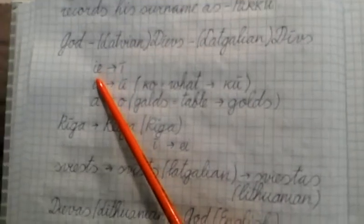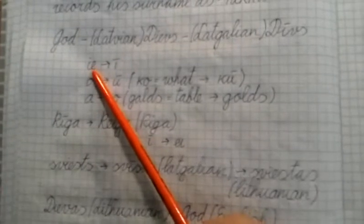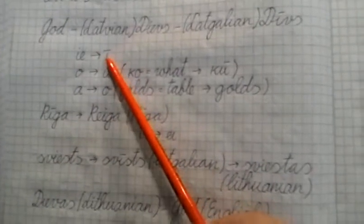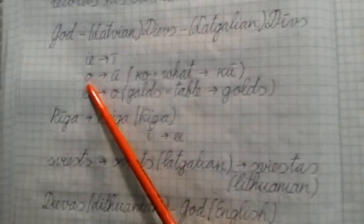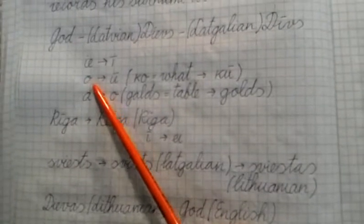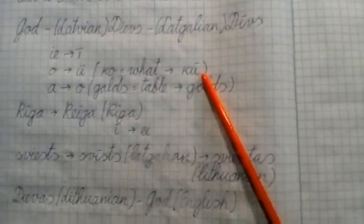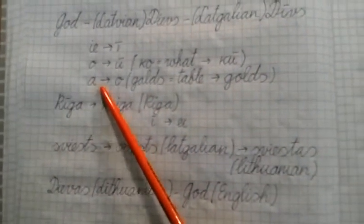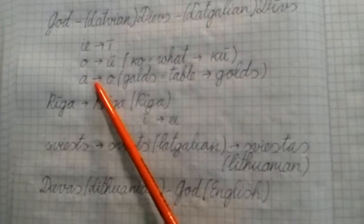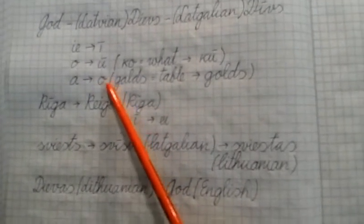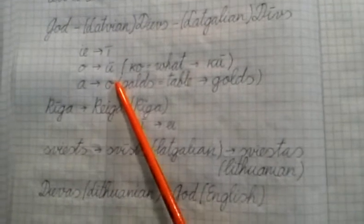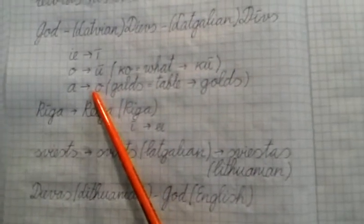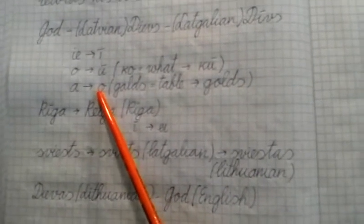For this example, here Latvian i becomes Latgalean i. Latvian u becomes Latgalean u. Latgalean u, but not ū. Latgaleans have not a letter ū, they have u.